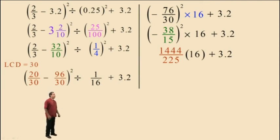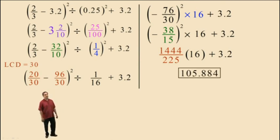Remember, it's been multiplied by 16. Now we have to perform that multiplication and the division before we do the addition. So what you have here is 1,444 times 16 divided by 225. And then when you get that result, you're going to add 3.2. And we will round off our final answer to the nearest thousandth. And so your final answer should have been 105.884.